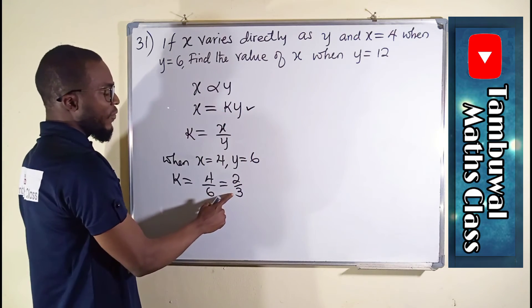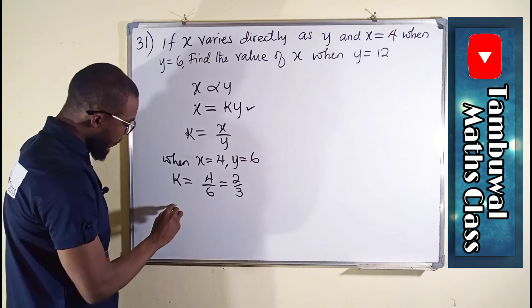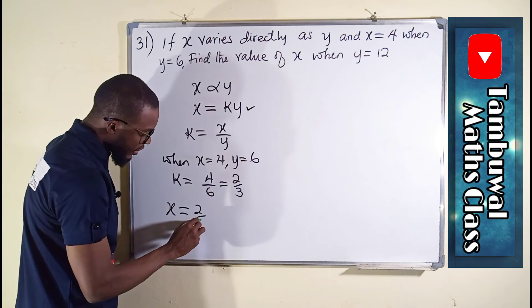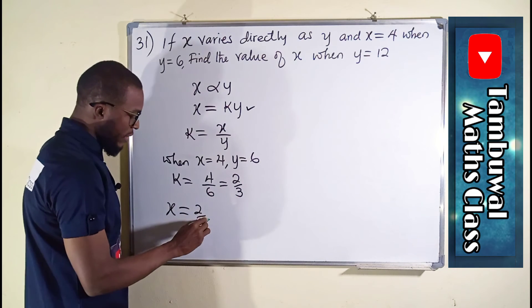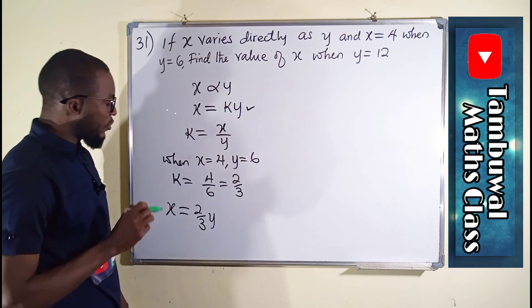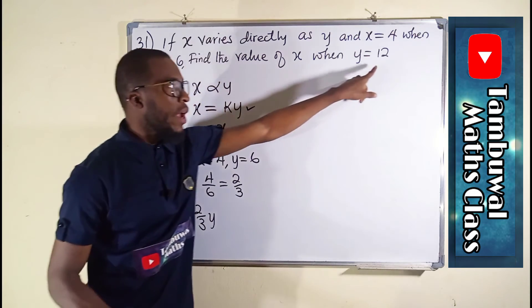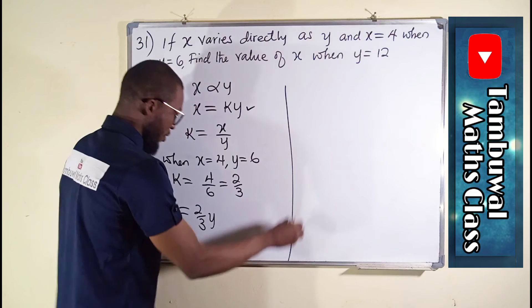Now let us find the relationship between x and y by substituting the value of k. We can see that x will now be equal to 2 over 3 times y. So now we can find the value of x when y equals 12 from that equation.